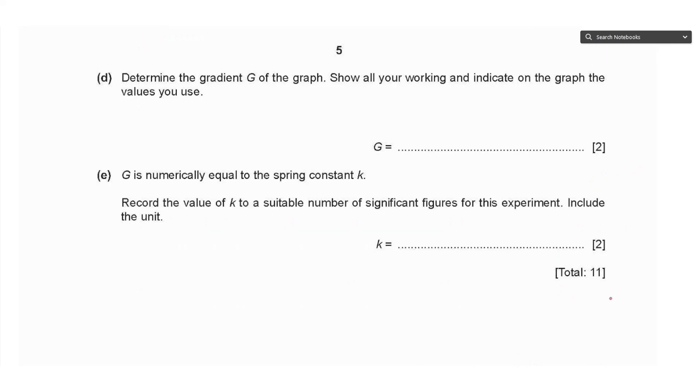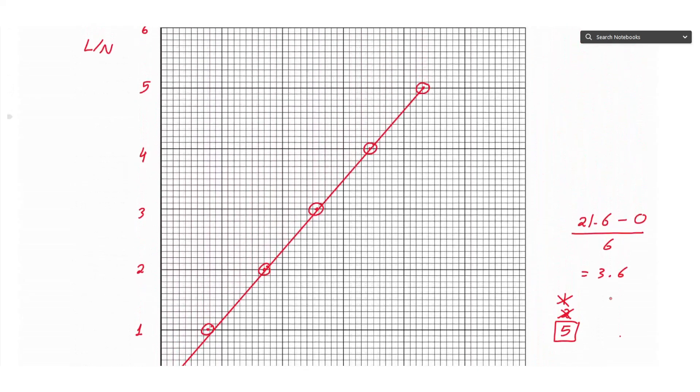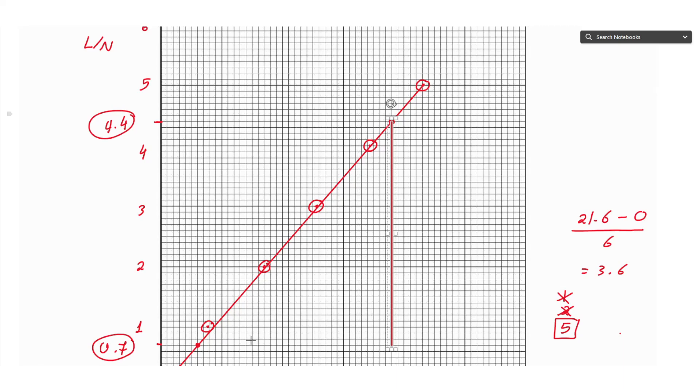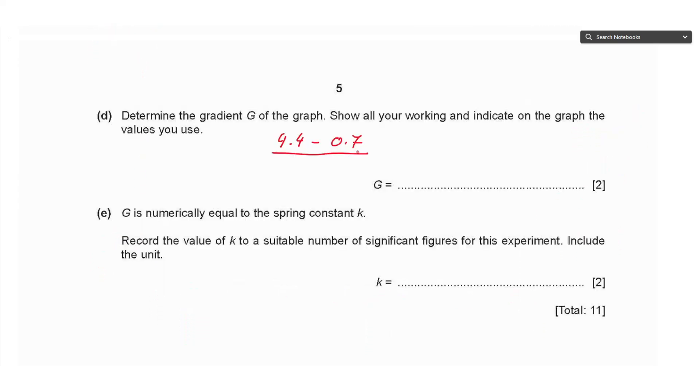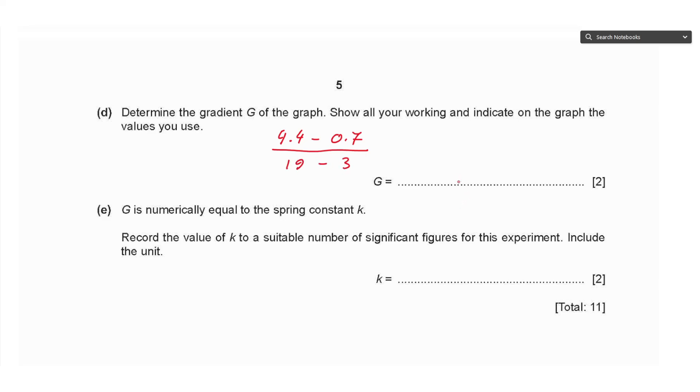Part D says determine the gradient g of the graph. Show all your working and indicate on the graph the values you use. Going back to the graph, we need to find points with good intersection with the grid. I have this point with y-coordinate 4.4, and from the other side this point at 0.7. We draw a triangle—a vertical line from the top point and a horizontal line from the bottom point. For the x-axis coordinates we have 3 and 19. So 4.4 minus 0.7 divided by 19 minus 3 gives an answer of 0.23. The y-axis has unit Newtons and the x-axis centimeters, so it's Newtons per centimeter.